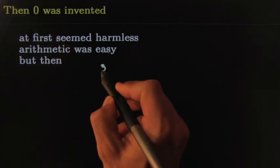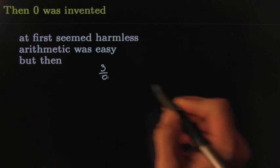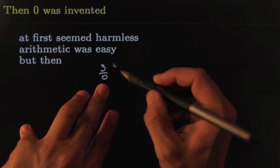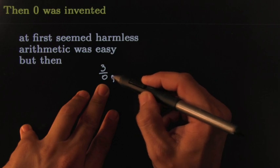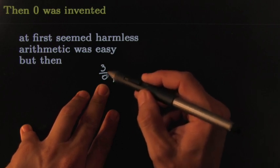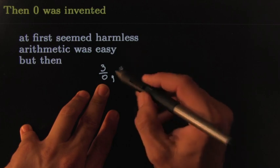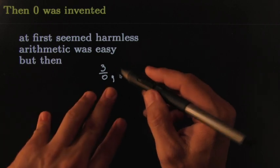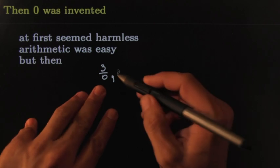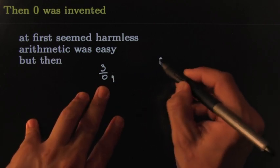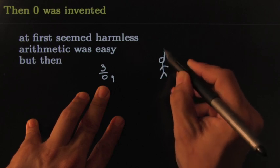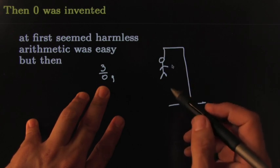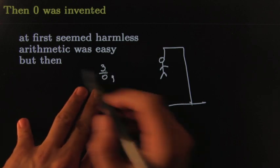But then guess what happened — this number starts to get a little bit tricky when you do things like: what if I take three and divide by zero? Strange things are happening here. Back then, some people learned that this was a bad thing to do. Your teacher would always say 'don't divide by zero,' and even the Catholic Church would get involved if you were caught dividing by zero — you would be hanged. It was a very problematic thing.